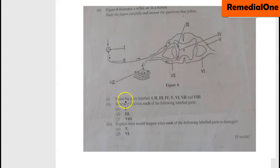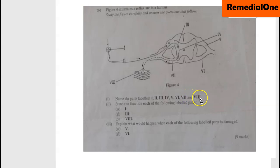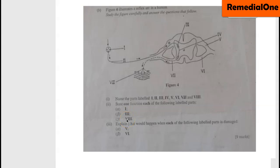Name the parts labeled I, II, III, IV, V, VI, VII, and VIII. State one function each of the following labeled parts: I, II, and IV. Explain what would happen when each of the following parts is damaged: Part V, then Part VI.